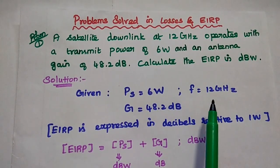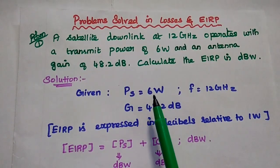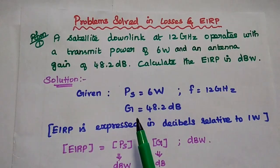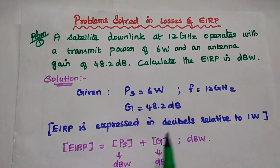The frequency f is equal to 12 GHz. The transmit power, that is source power, is equal to 6 Watt. The antenna gain is 48.2 dB.